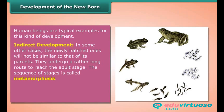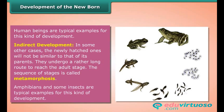In indirect development, the newly hatched ones will not be similar to their parents. They undergo a rather long route to reach the adult stage; the sequence of stages is called metamorphosis. Amphibians and some insects are typical examples of this kind of development.